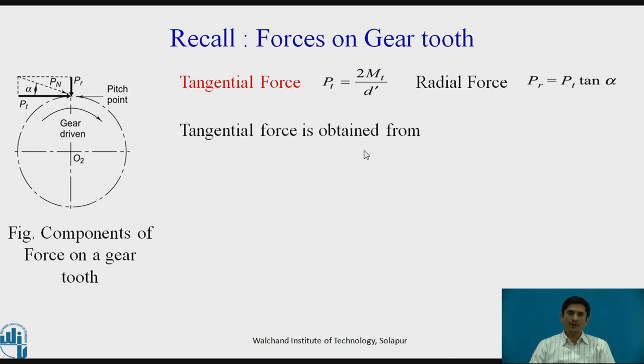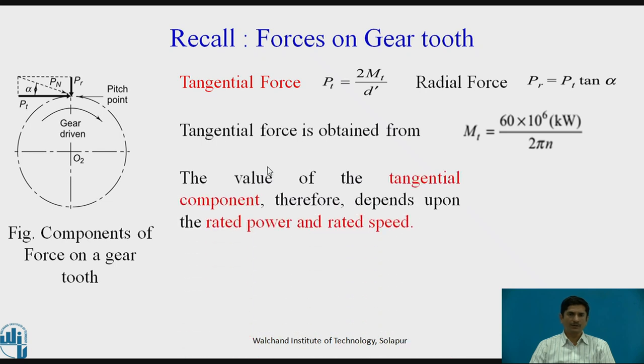The tangential force is obtained from the equation of torque where torque Mt equals 60 × 10^6 kilowatt upon 2πN. The term Kw is the power and N is the speed. If we know the speed and the power input, we can calculate what is the torque. The value of tangential component therefore depends upon the rated power and rated speed. Now, in the question, it is asked to calculate the rated power. What do we need to do?